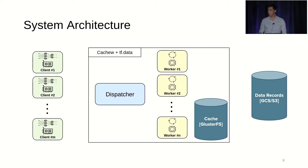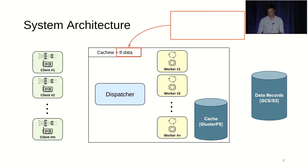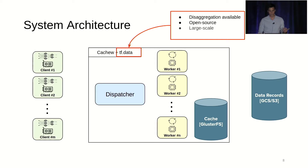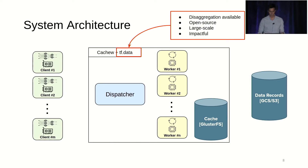This is the system architecture for CacheU. We build on top of TF Data Service because this disaggregation is already available, it's an open source project, it's very popular, and it's designed for large-scale distributed ML workloads with high impact to both research and production environments.